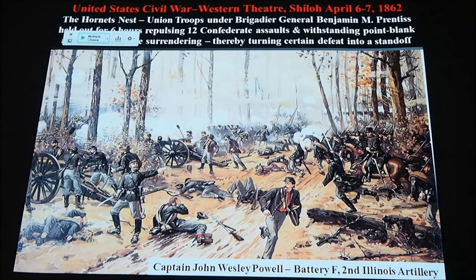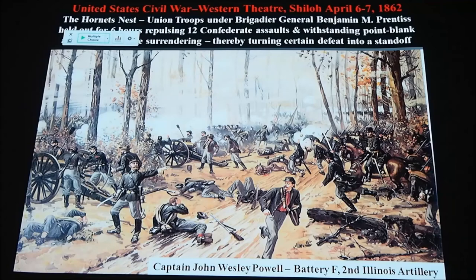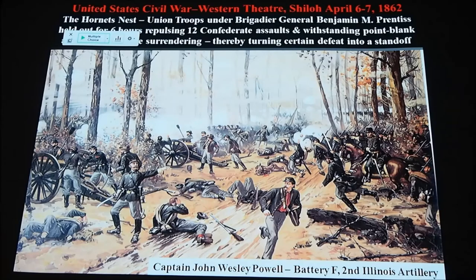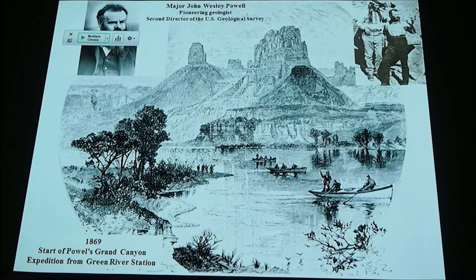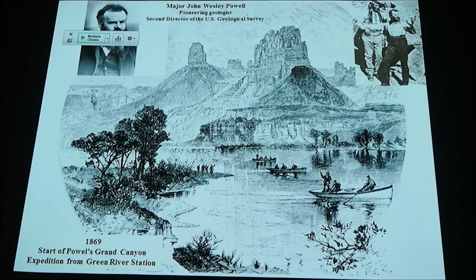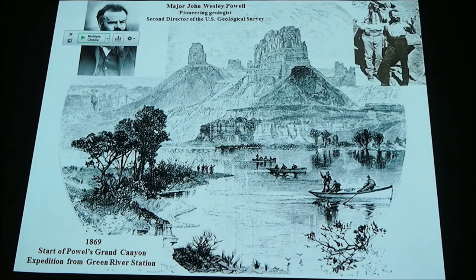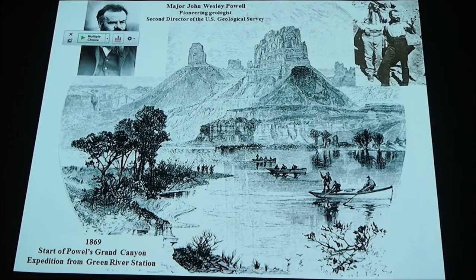But John Wesley Powell, as soon as he could, went back to his unit and fought through the rest of the Civil War, including a lot of major battles. He was that kind of a guy. And after the war, the Union had this problem of how do we pay our troops? We promised them money for fighting and, gee, the war is over, but we don't have a lot of money left. We spent it all on the war. So they said, you know, we've got all this public land out west. We'll give them some land.